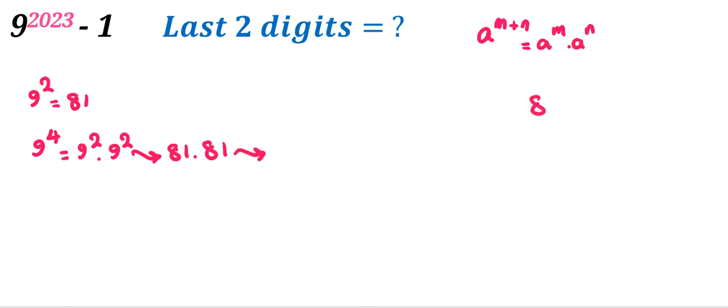And if you want to find the last two digits, if you multiply 81, 81, it will be 6561. So it will be 61.